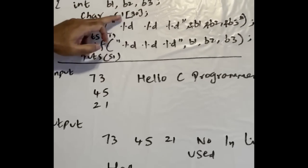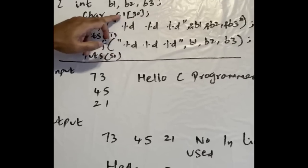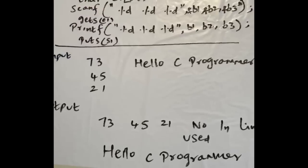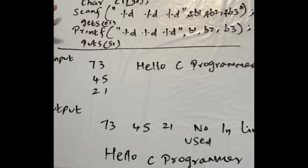B1, b2, b3 are all integers defined. There is a character c1[30] - that means c1 is an array of 30 elements, its character value.